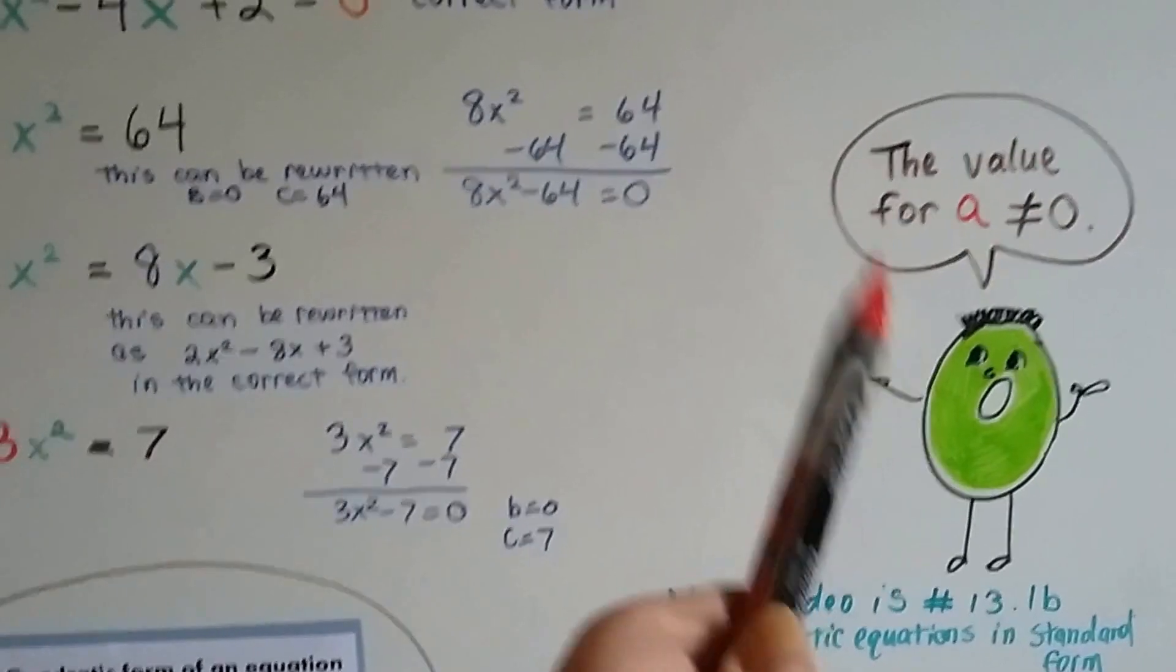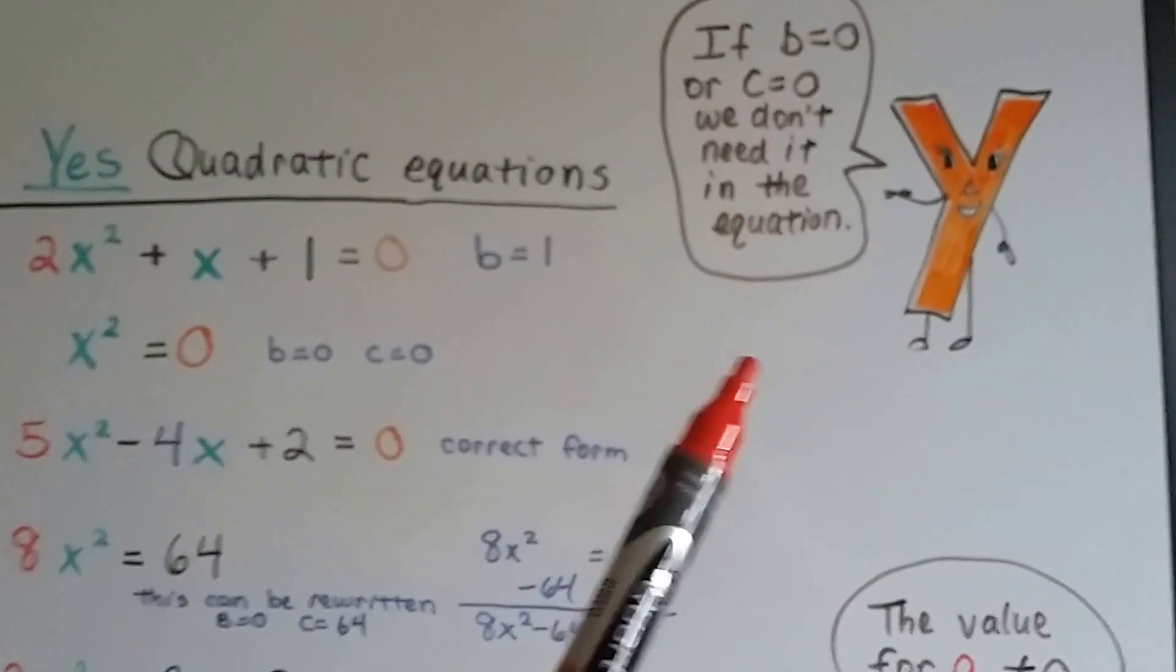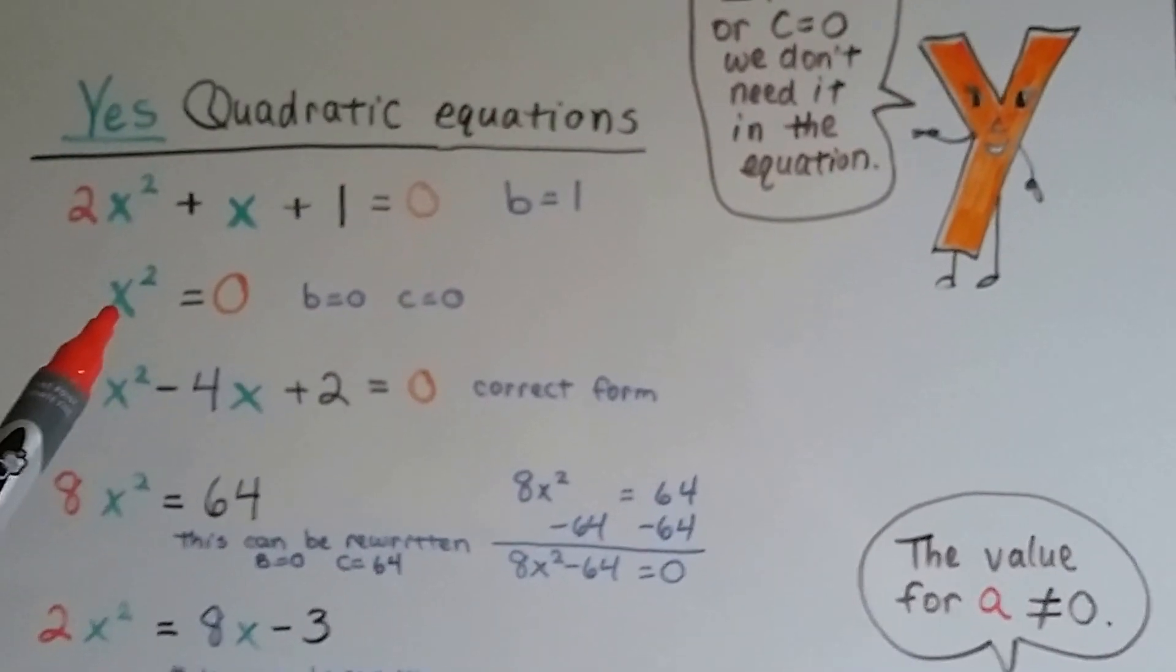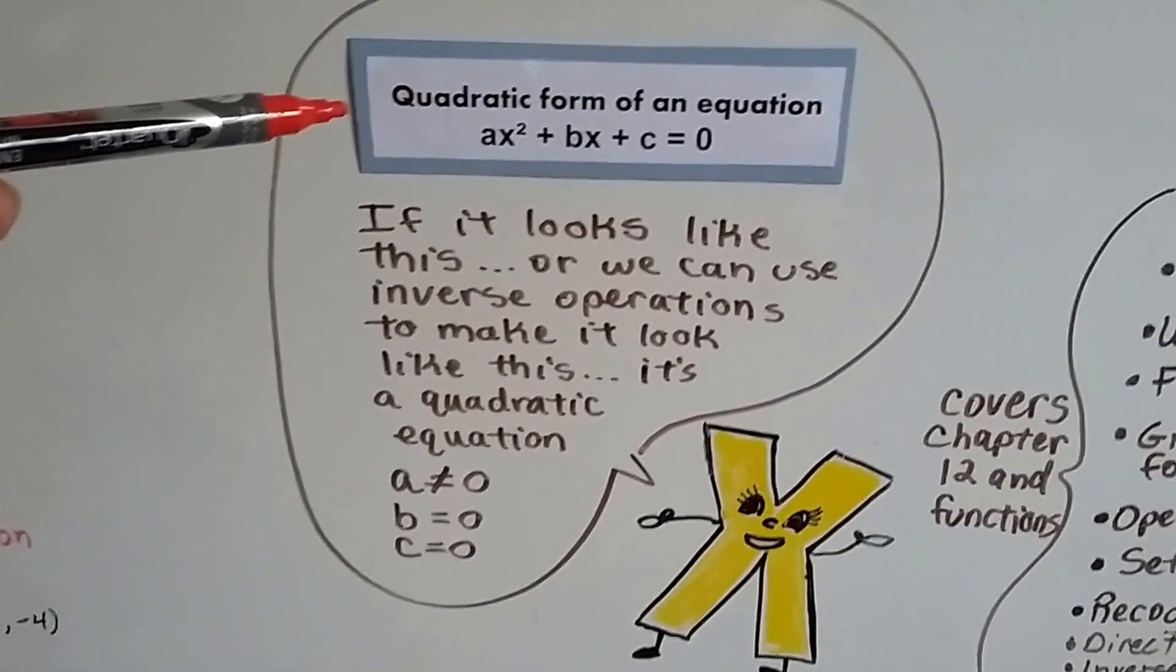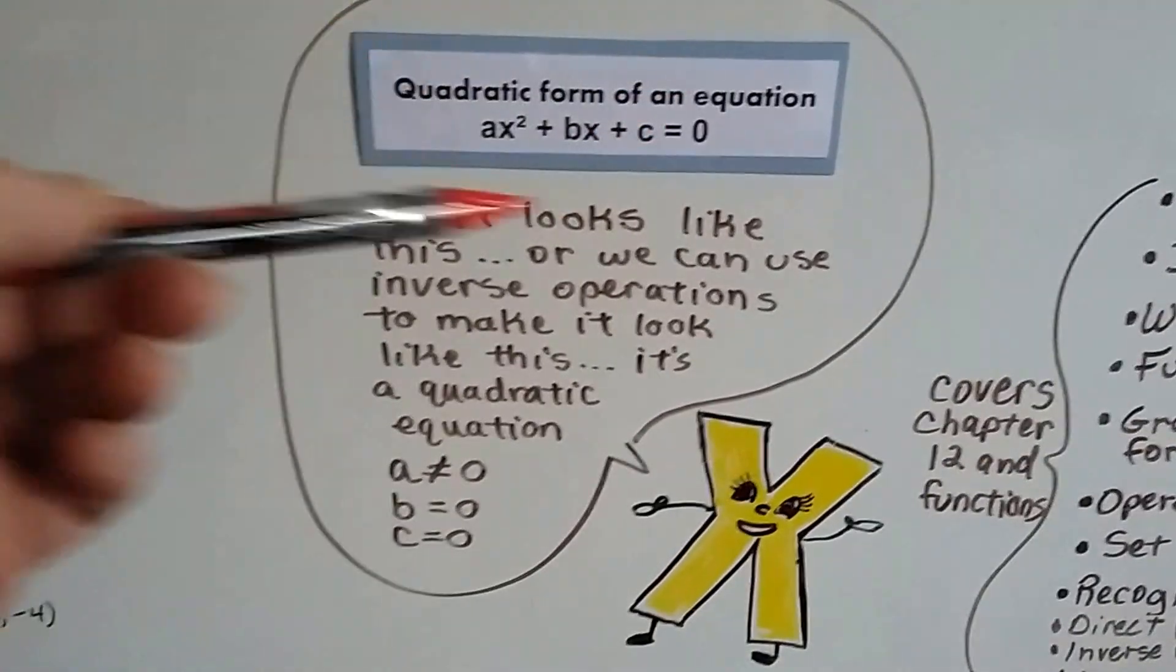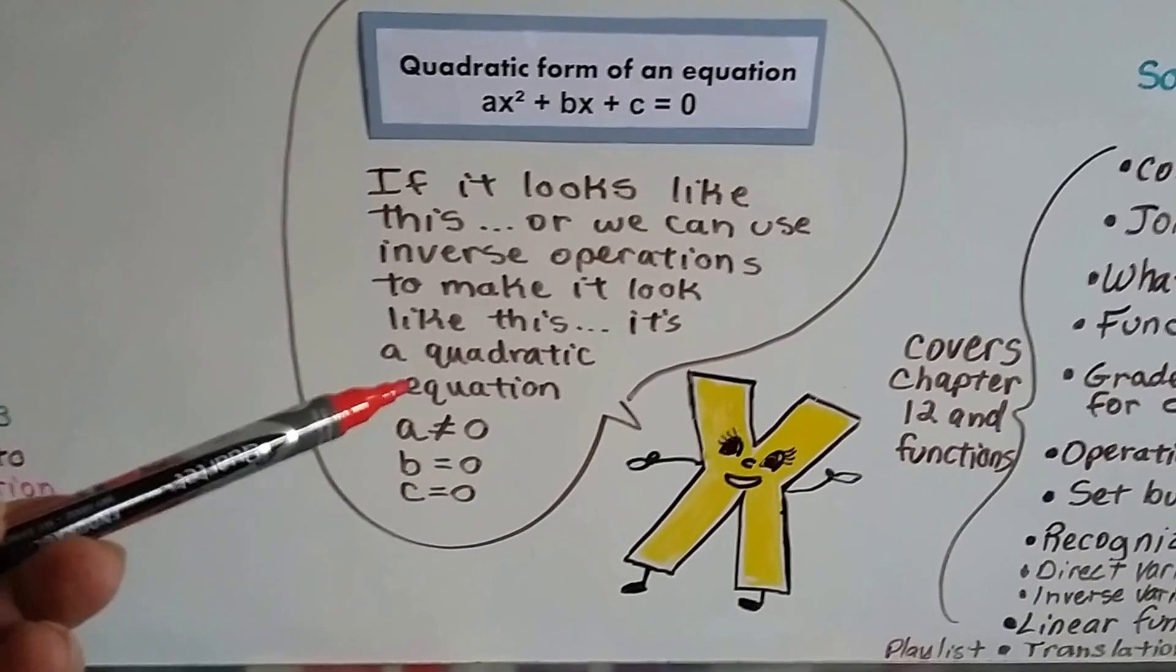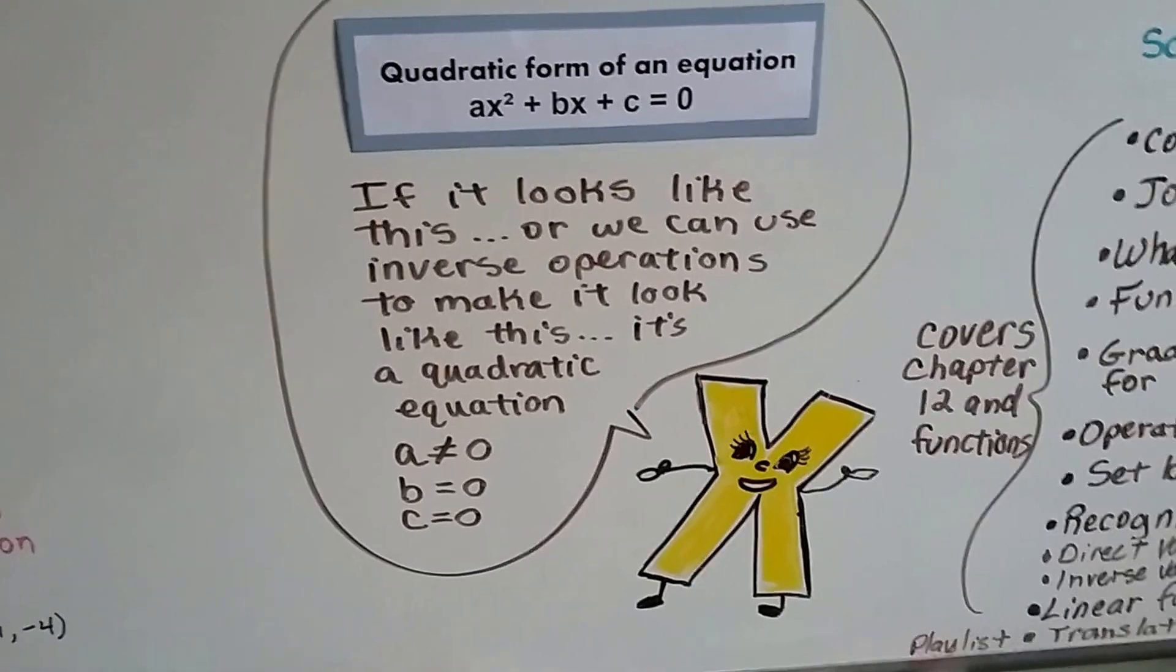Just remember the value for a cannot equal zero. And if the b and c are set to zero, we don't need them in the equation. If b and c are zero, don't even add them. So the quadratic form of an equation like this, if it looks like this, or we can use inverse operations to make it look like this by subtracting from each side or rewriting it like we did with these, it's a quadratic equation. A cannot equal zero, but b and c can. We just don't include them in the equation when they do.